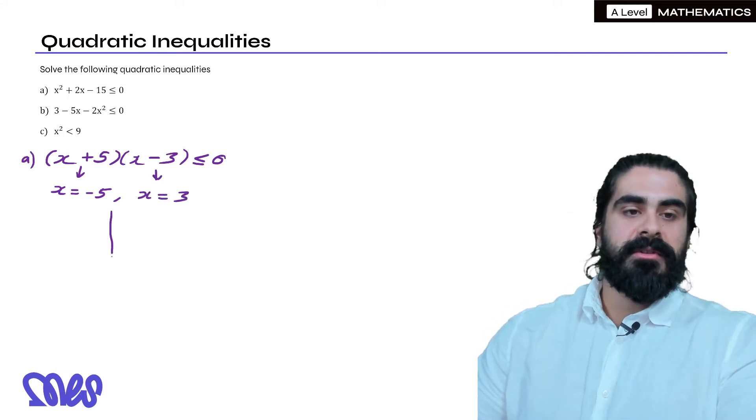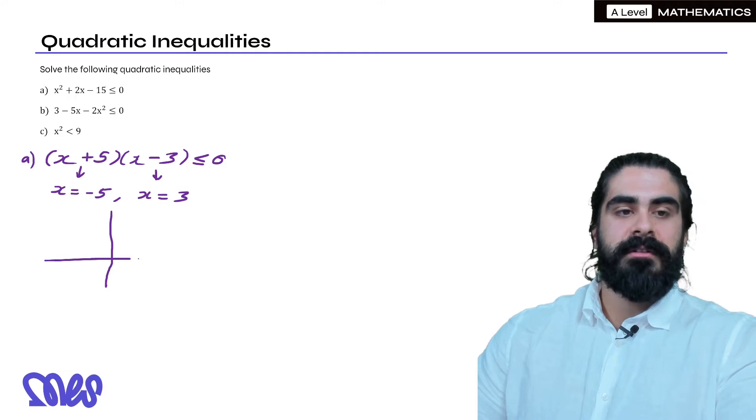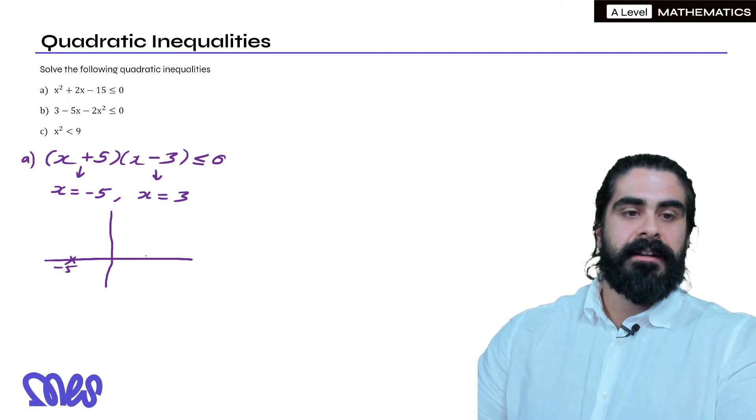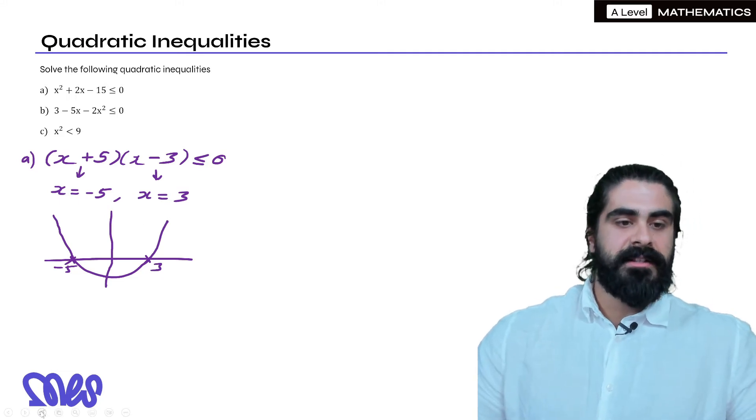Now I always recommend that you do a sketch. We always want to avoid making any silly mistakes. So x is minus 5 and x is 3. Just a very basic sketch here. Now we want to know when is it less than 0.